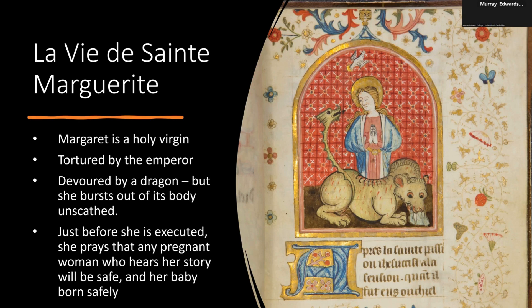This is the story of 'La Vie Sainte Marguerite.' Saint Margaret is a holy virgin — a shepherdess — minding her own business looking after her sheep when the emperor rides by. He takes a fancy to her and invites her to come live with him and be his wife. She's far more interested in worshipping God and tells him she already has a beloved, and that's Jesus. He is not interested in this because he is not a Christian, so he takes her prisoner and tortures her. He throws her into prison, and quite surprisingly in this prison is a dragon, which swallows her whole — but she bursts out of its body unscathed.